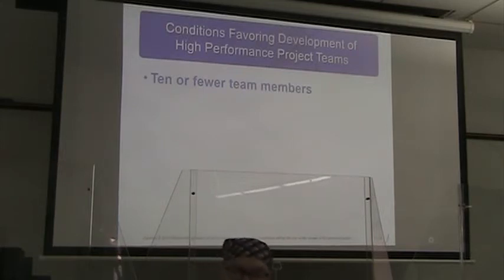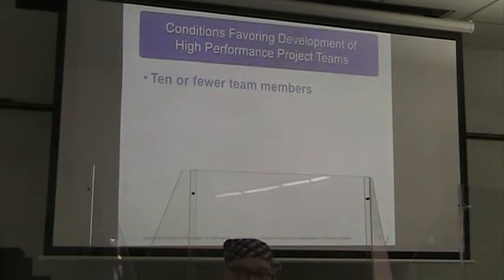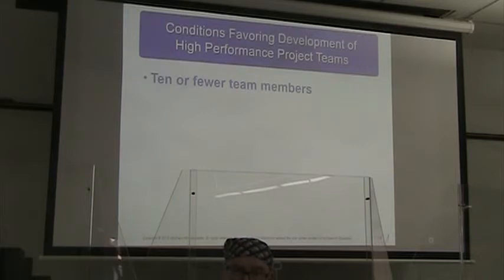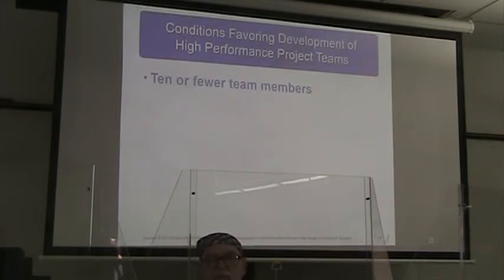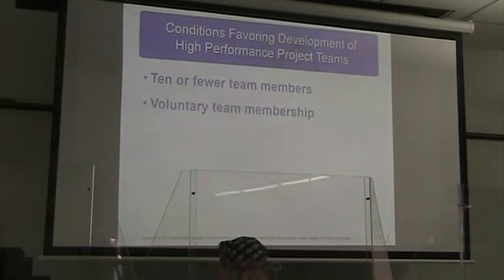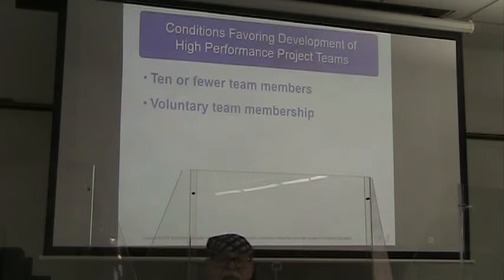What are the conditions that favor development of a high-performance project team? One thing is a smaller group — they list ten or fewer team members. It is true that the fewer team members we have, the easier it is to make personal relationships. Voluntary team membership also matters — if people ask to be on the team rather than just being drafted, that is definitely going to influence how they feel about the project.